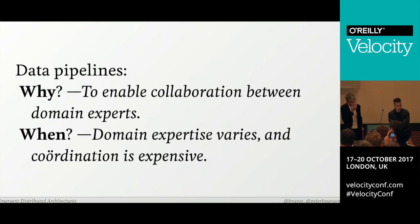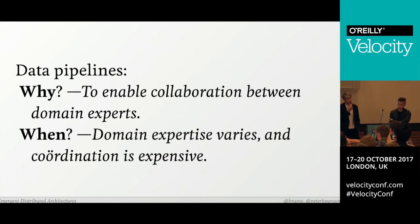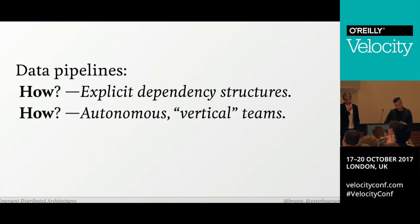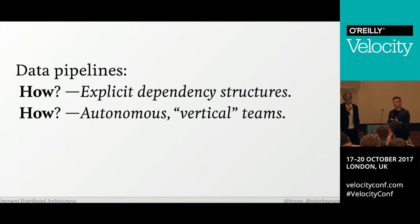We also identified the ideal circumstances for and form of data pipelines as a modern software architecture pattern. Why do we build them? Principally, to enable different kinds of people existing in different domains to collaborate. When should you invest in this architecture? When domain expertise varies significantly and coordination between teams becomes prohibitively expensive. How do we build them? With an explicit dependency structure with a richness that actually reflects the scale of the organization. And just as we need product verticals for microservices, we need them for data as well — the people selecting and operating databases should be on the same team as the people who actually use them.